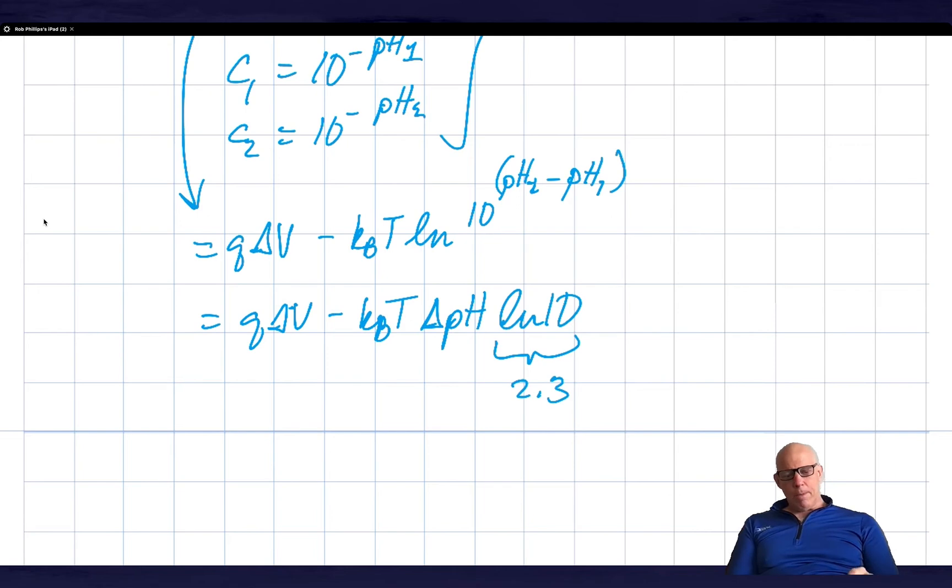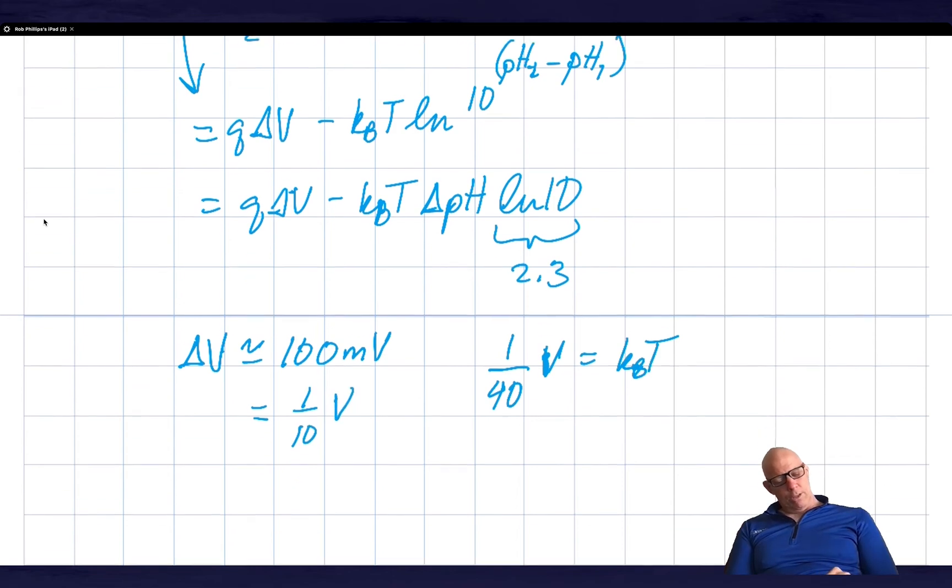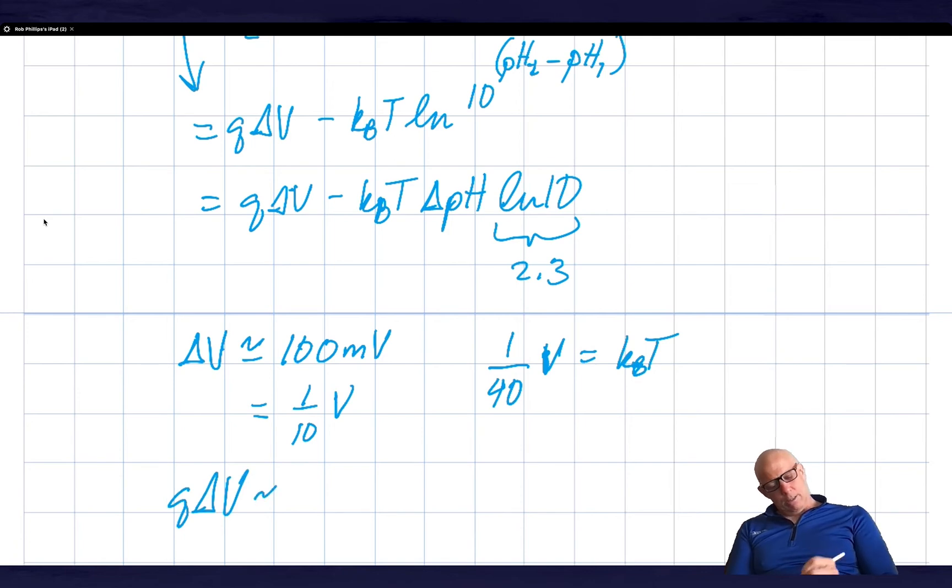My last comment is to say that a typical delta V might be something like 100 millivolts. If you go review what the typical membrane potential is, I'm going to carry around in my head that it's of order of 100 millivolts. And I also have a conversion factor that 1/40th of a volt is equal to KBT. So this is a tenth of a volt. So Q delta V for our case is going to be equal to, on the order of, about 4 KBT.